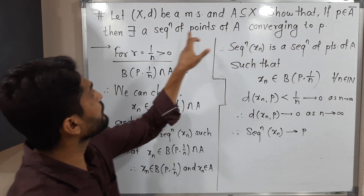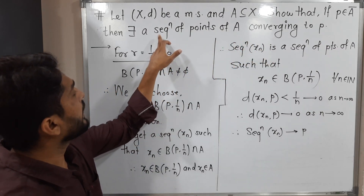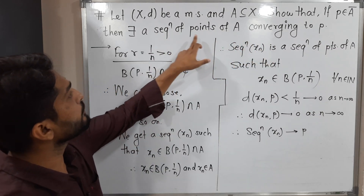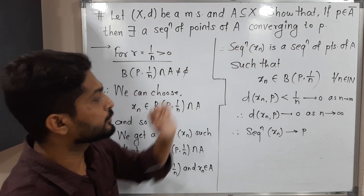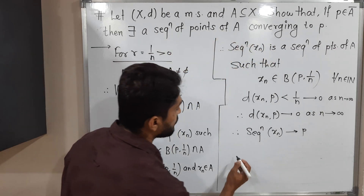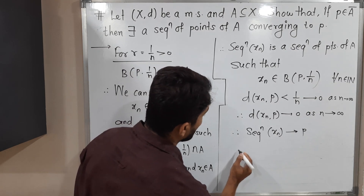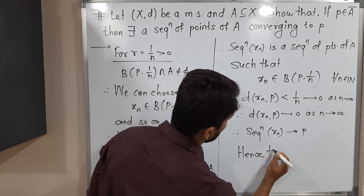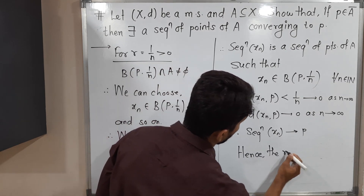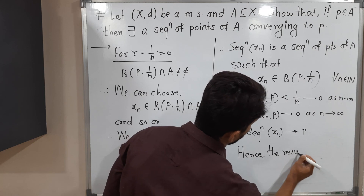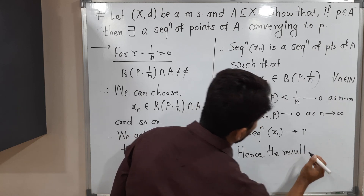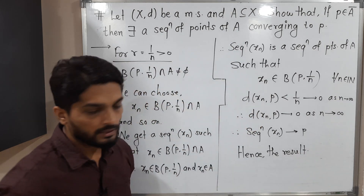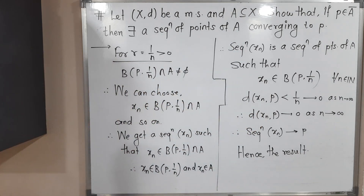So here we get that Xn is the sequence of points of A such that Xn converges to P. Our target is achieved — we had to prove there exists a sequence of points of A converging to P. Hence the result. In this way we completed this proof. Thank you, see you.